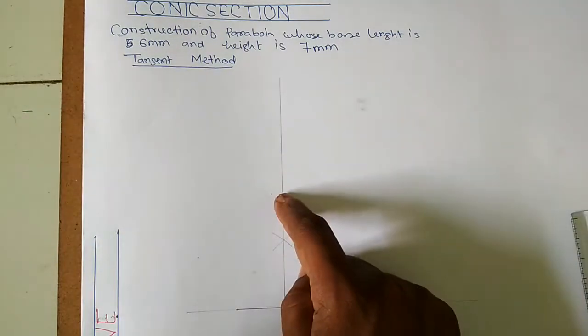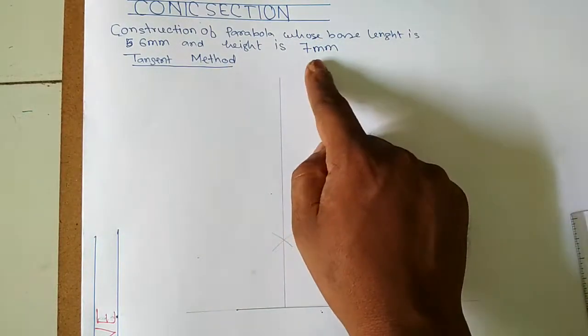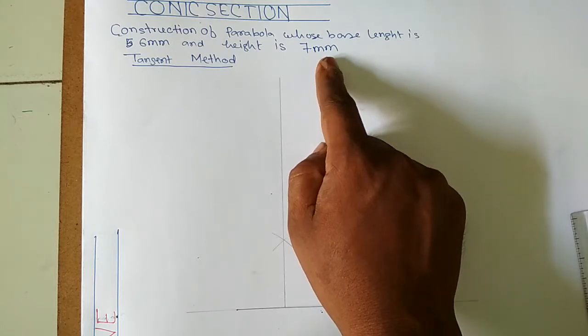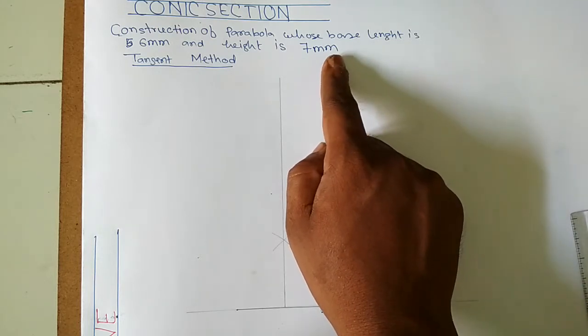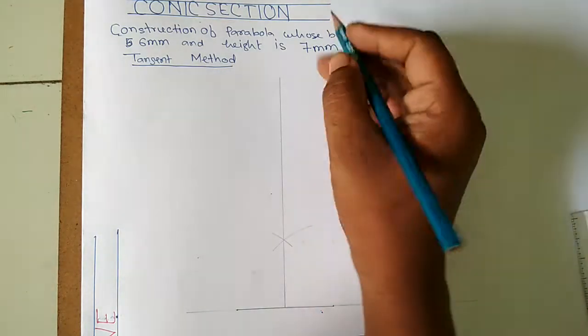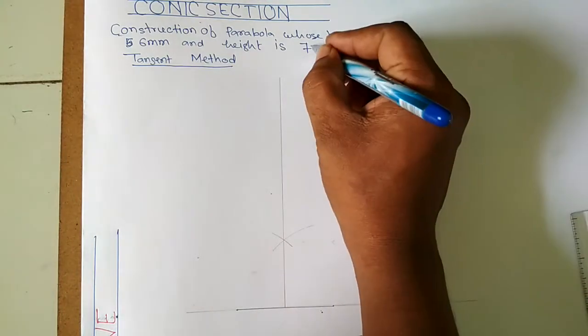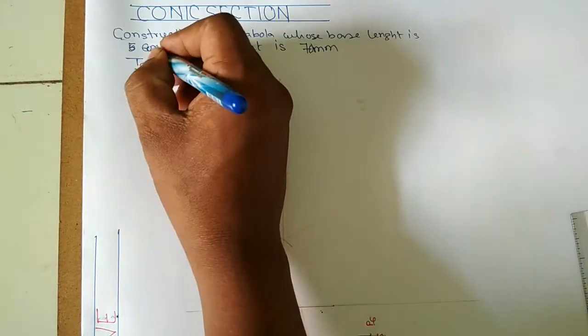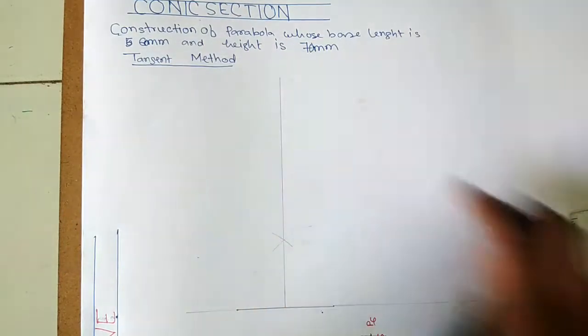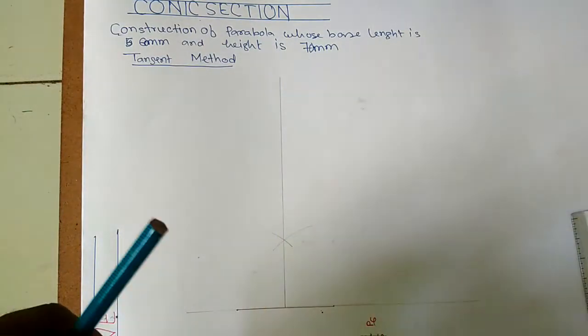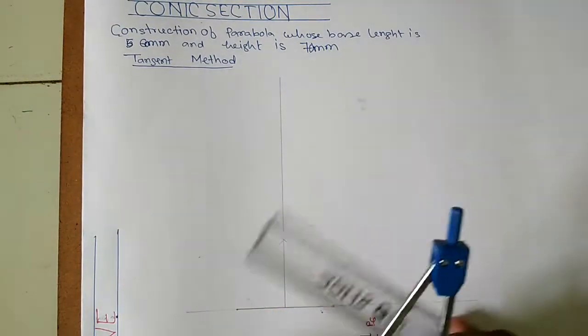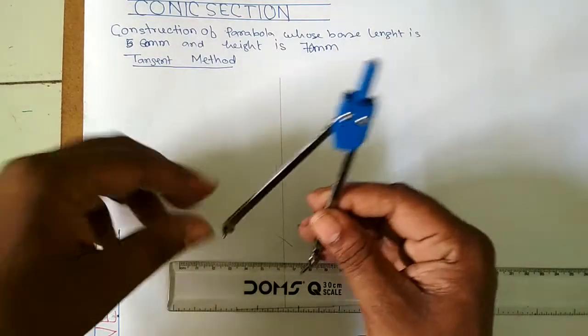We got the perpendicular bisector but the height is given as 7mm so we will make double of it. It will become 140mm. So we will take the length of 140mm from the required scale.